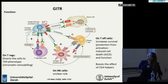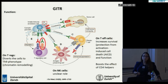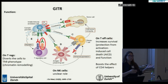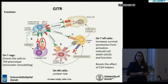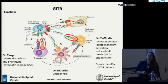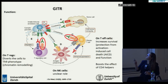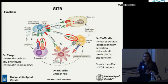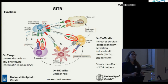GITR is important on the level of T regulatory cells, because it diverts T cells to a TH9 phenotype, and at the same time it is also important on the T effector cells. As you can see here, it is the interaction with the effector cells and the accessory cells, by increasing the survival of them and, moreover, helping on the CD4 helper function.